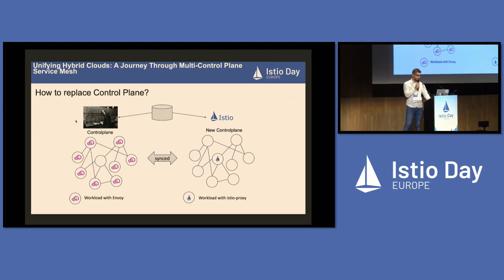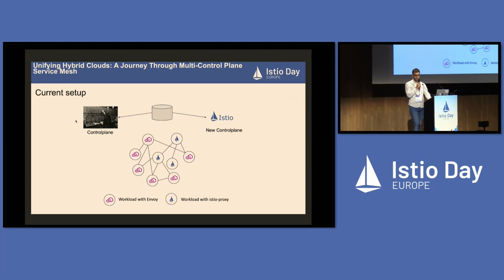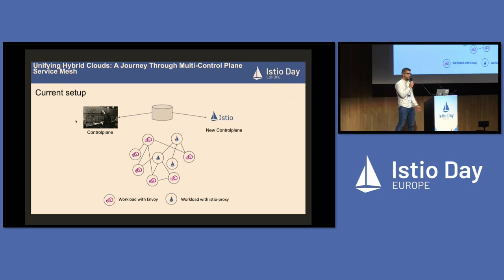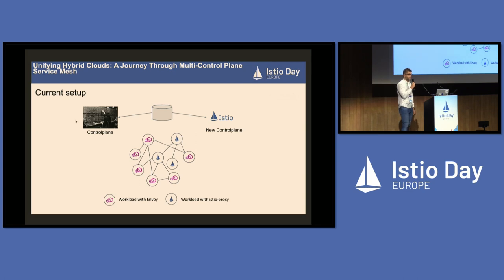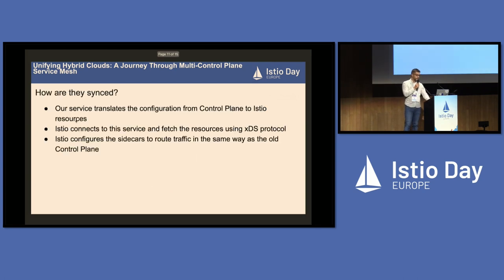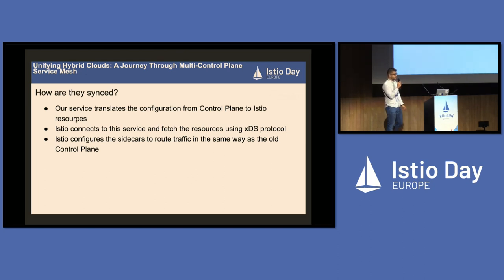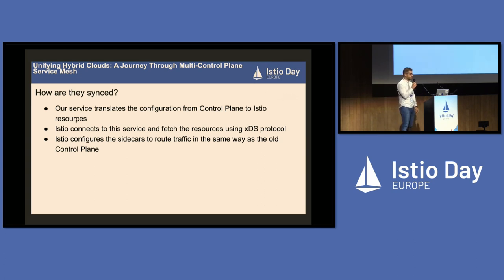The idea is simple; the implementation is sometimes complicated. Today we have part of our fleet running Istio Proxy and part connected to the old control plane. The services don't need any change — it's transparent, just one line of configuration change for service owners. To keep these two meshes in sync, we have a service that translates configuration from the control plane to Istio resources, and Istio connects to this service using the XDS protocol. We registered the services as an extra config source on Istio.